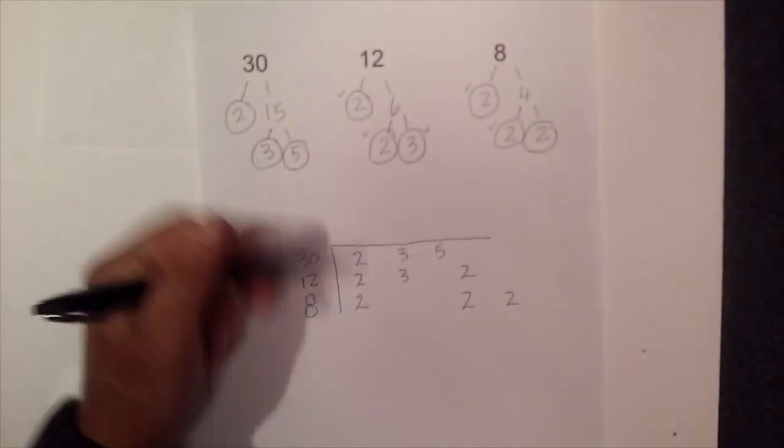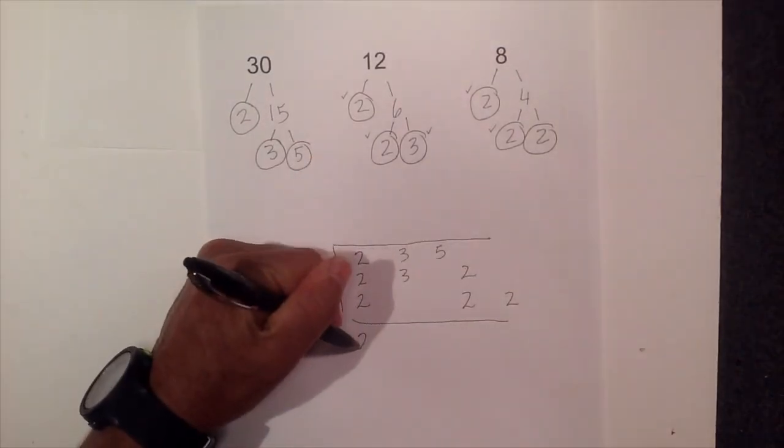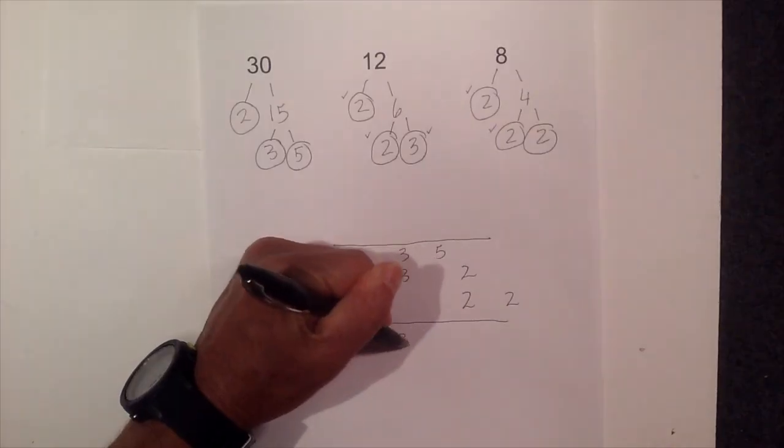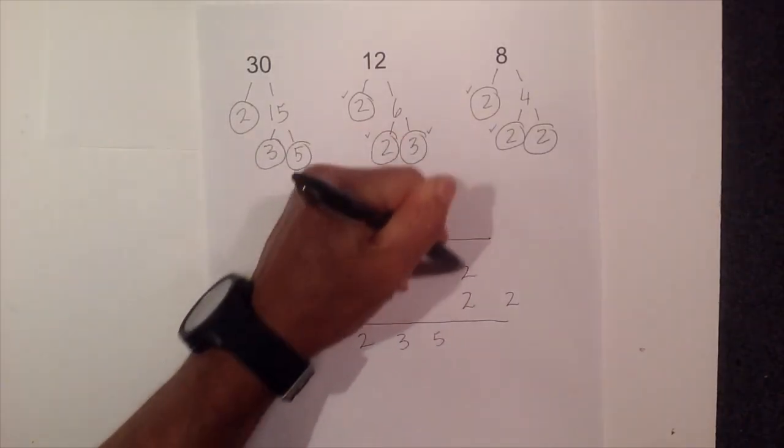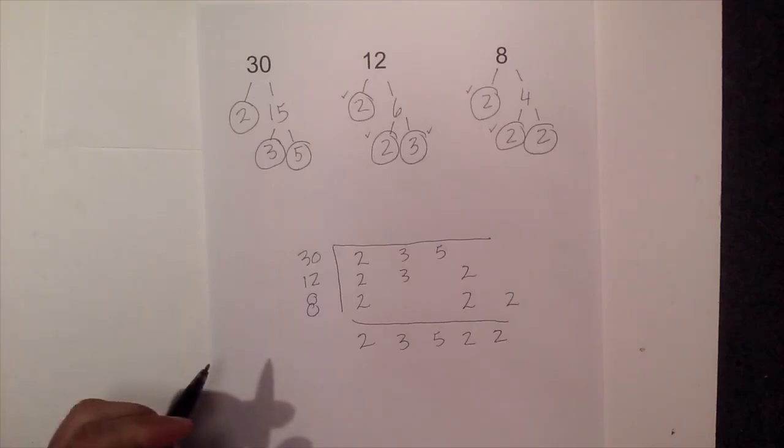So now I just bring down the columns and start multiplying. So I will bring the 2's down. I have a 2. I have a 3. Let's go 5, 2, and 2. And now all I have to do is multiply these together.